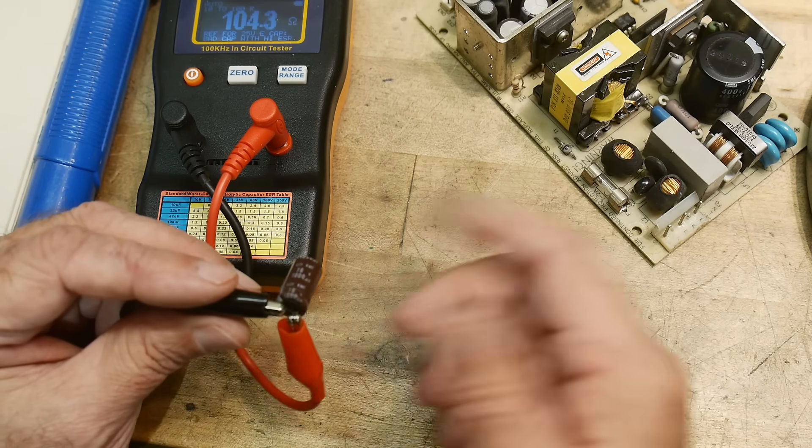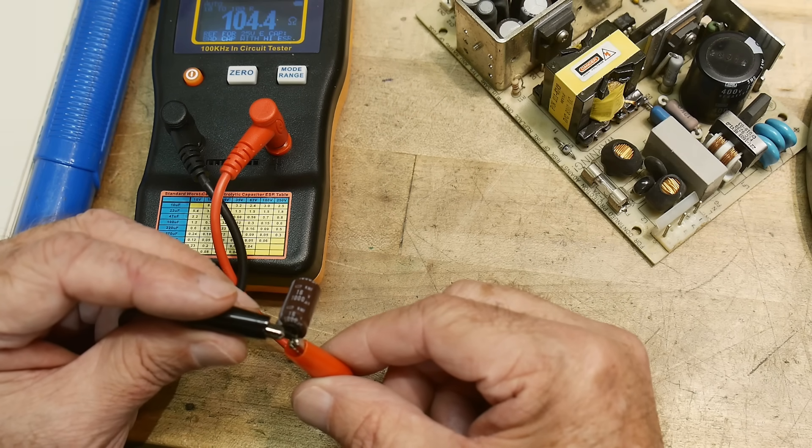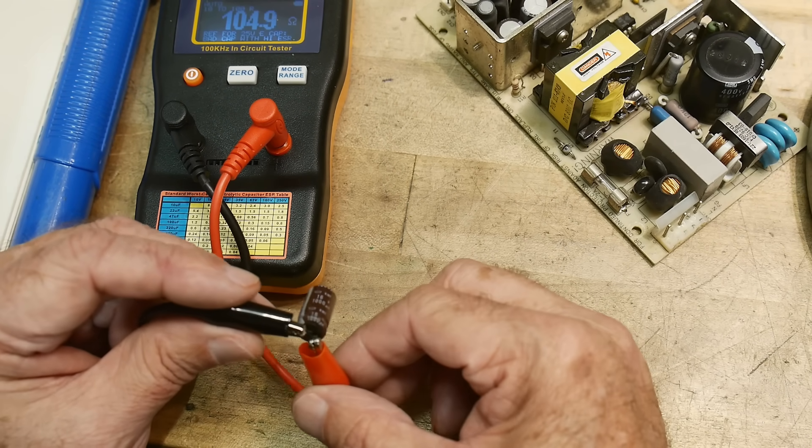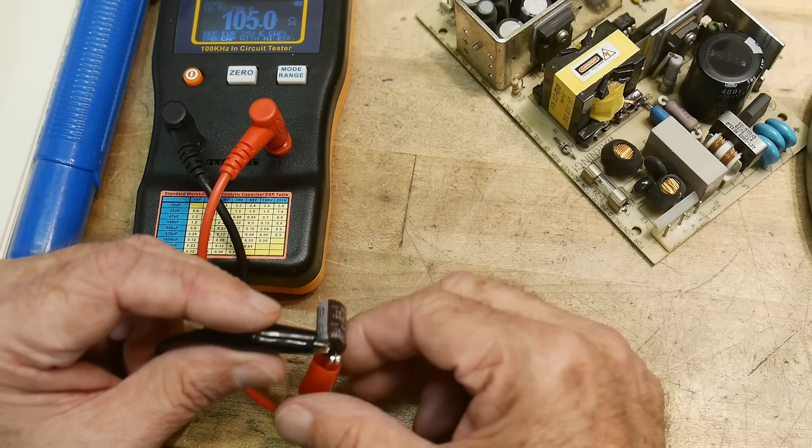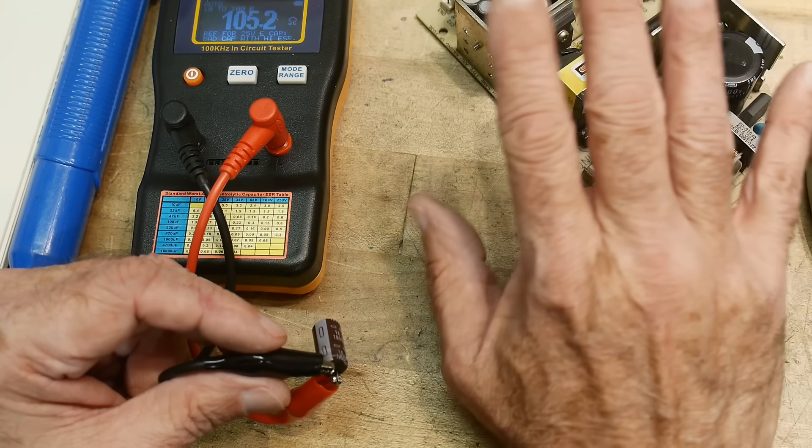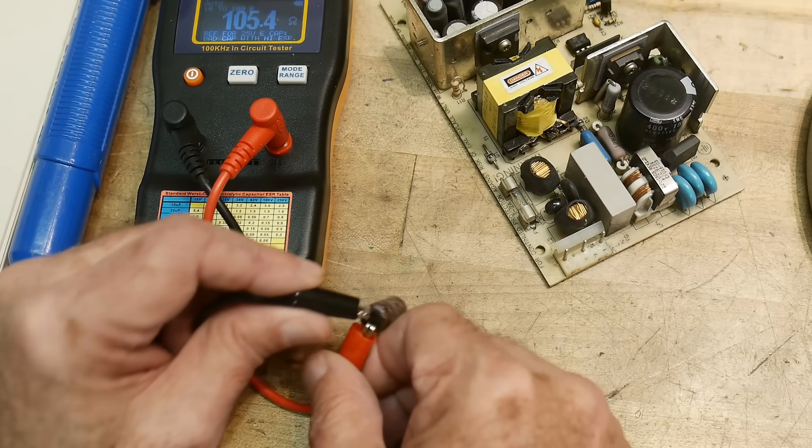So it did measure different out of circuit than in circuit, there were other things in there. But it's because this one was so bad, so bad, the rest of the circuit was kind of leaking in as well. And you can have things in parallel and stuff too. So the in circuit testing is not a panacea, it's not going to always work. But in this particular case, it did work.